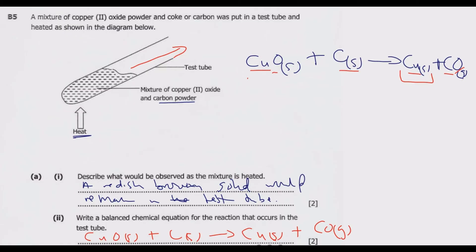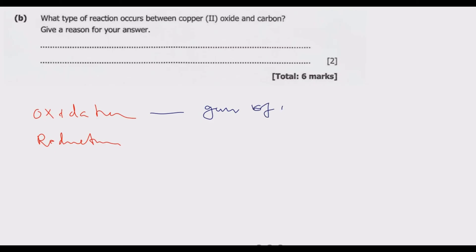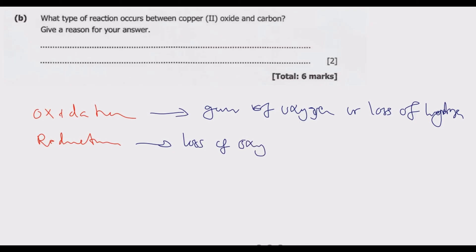Question B: what type of reaction occurs between copper oxide and carbon? Give a reason. In this context, we are asking whether it is oxidation or reduction. Oxidation occurs when there is a gain of oxygen or loss of hydrogen. Reduction is the loss of oxygen or gain of hydrogen. Take note of these differences.